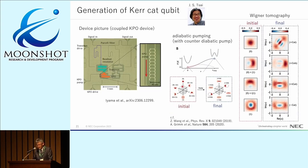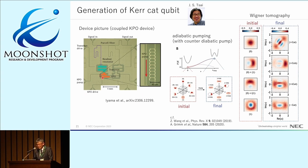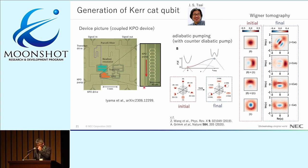The Tsai team demonstrated this using a device consisting of a KPO, an ancillary transmon, and a readout resonator. They prepared different initial states — zero Fock, one Fock, and superposition — adiabatically ramped up the pump, and checked the final state by Wigner tomography, obtaining the expected cat states correspondingly. The key feature of this device is the ancillary transmon, which was absent in similar experiments from other groups; this ancillary transmon made Wigner tomography possible in a relatively straightforward way while keeping the KPO coherence high enough.